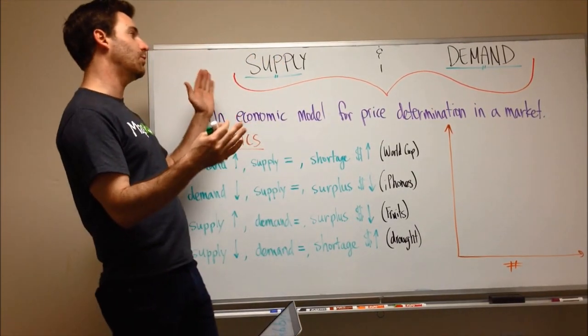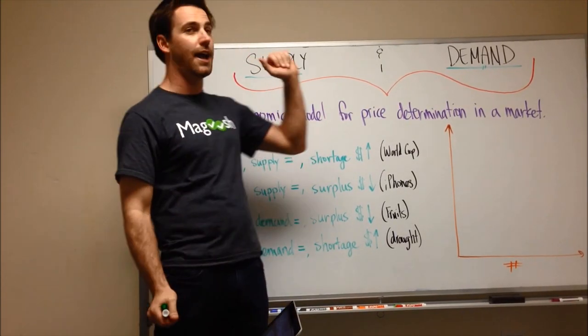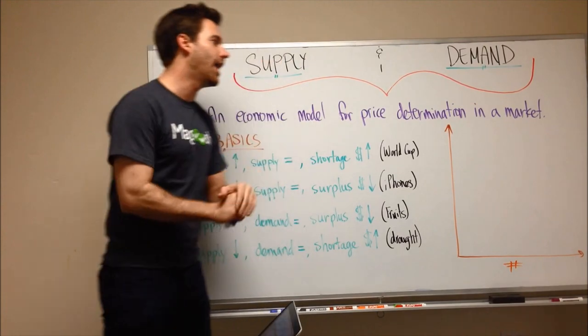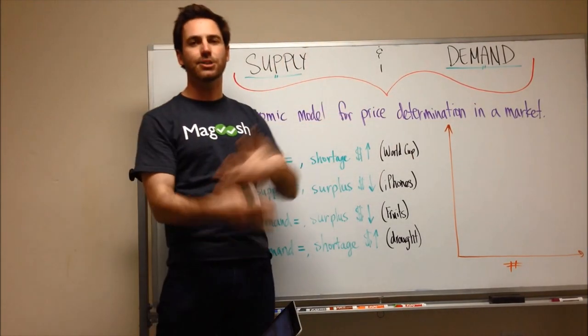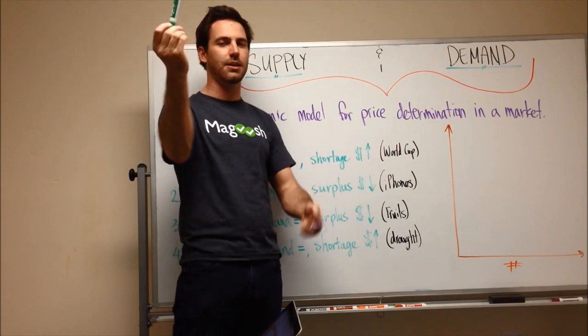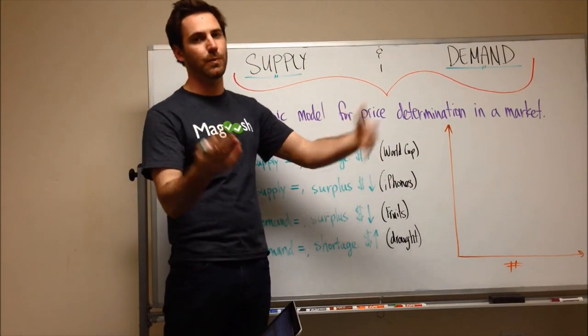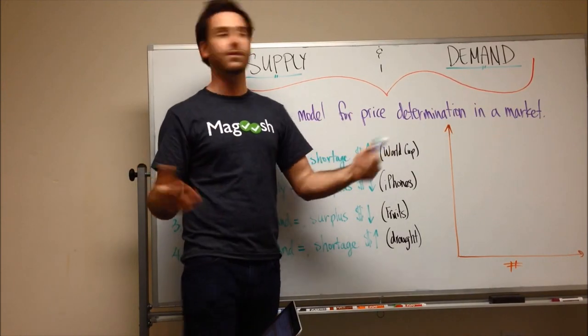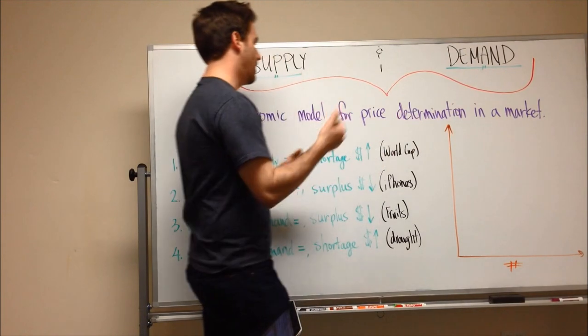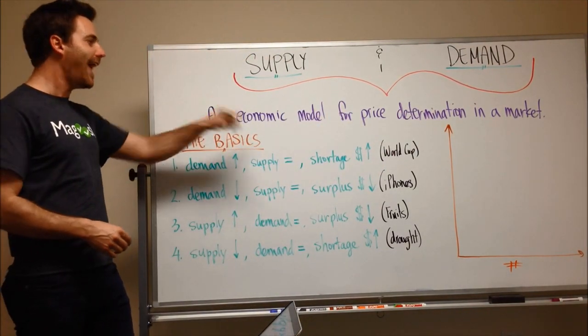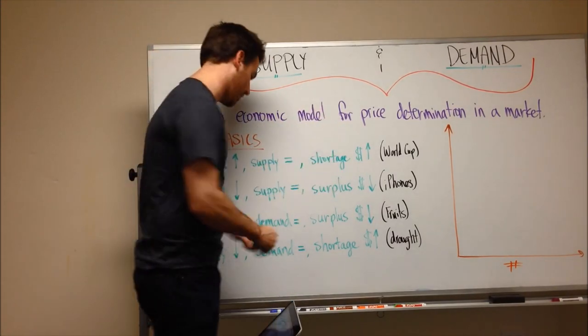So we're dealing with a fundamental concept of economics known as supply and demand. And so supply is basically how much of a thing there is, so how many markers are there in the world. This also accounts for how difficult it would be to create these things or grow these things. And the demand is how much people want it.